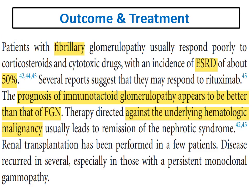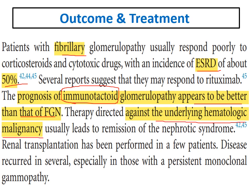Regarding outcome: fibrillary glomerulopathy, the most common differential diagnosis, is associated with end-stage renal disease in 50% of patients. The prognosis with immunotactoid is slightly better than fibrillary. Treatment is mainly directed against the underlying hematological malignancy — CLL, multiple myeloma, or lymphoplasmacytic lymphoma — and this leads to remission of nephrotic syndrome.